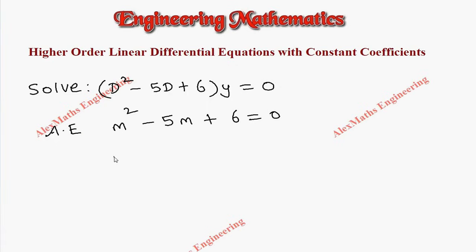It is a quadratic equation. We have to factorize and after factorizing, we get (m - 3)(m - 2) equal to 0. We get two values for m: one is 3, another is 2.